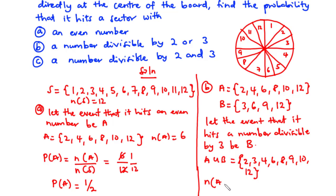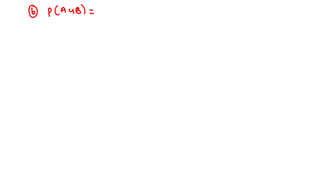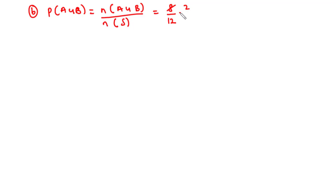The number of elements in A union B is 8. So P(A union B) = number of elements in A union B divided by number of elements in S = 8 divided by 12. Simplifying, 4 goes into 8 two times and into 12 three times, so P(A union B) = 2 over 3.